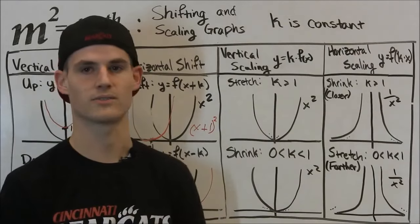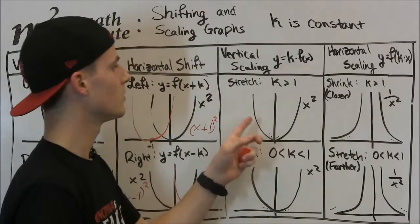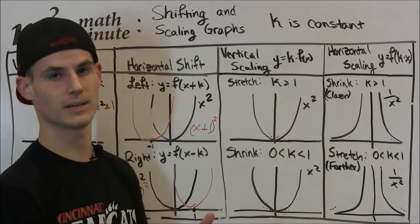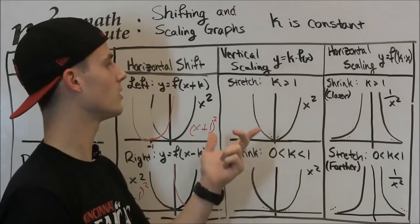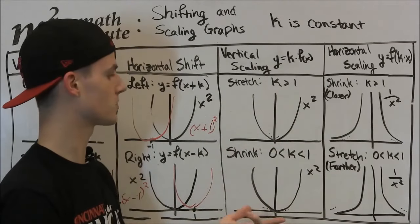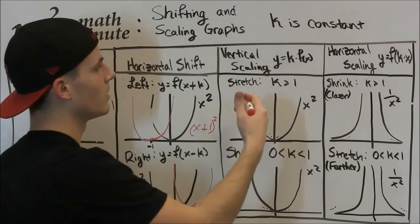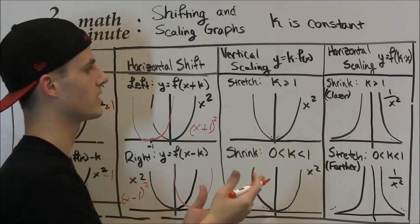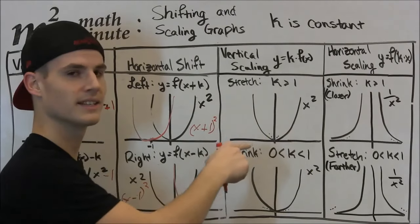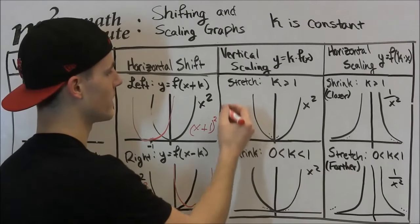Now, this is where things get a little confusing. We're going to talk about vertical scaling. So what we do now is when we multiply by a value, we're going to change it in a different way. We're going to call it vertical stretch or vertical shrink. So in this case, if we have y equals a constant times f(x) outside the function, we're going to stretch it if k is greater than 1. So let me draw an example and we'll talk about it.